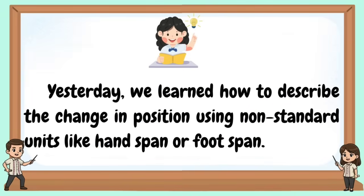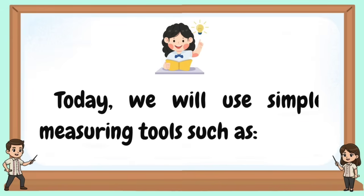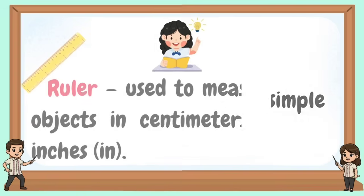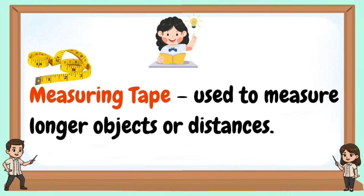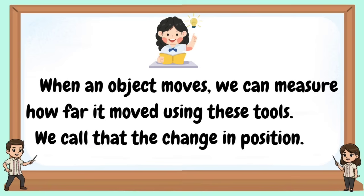Yesterday, we learned how to describe the change in position using non-standard units like hand span or foot span. Today, we will use simple measuring tools such as a ruler — used to measure small objects in centimeters or inches — and a measuring tape — used to measure longer objects or distances. When an object moves, we can measure how far it moved using these tools. We call that the change in position.